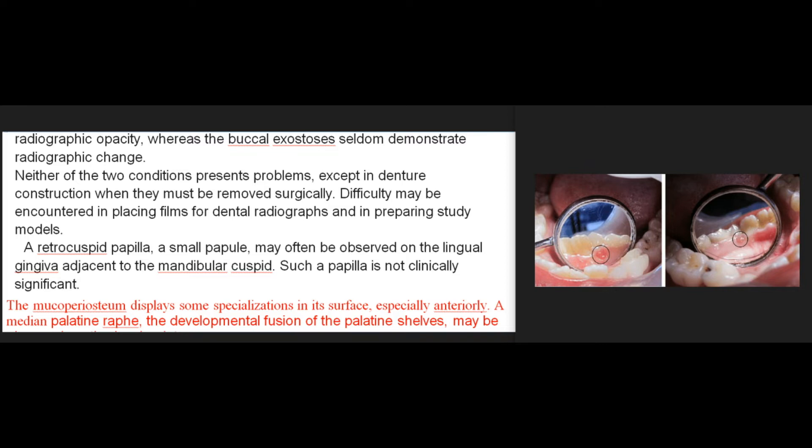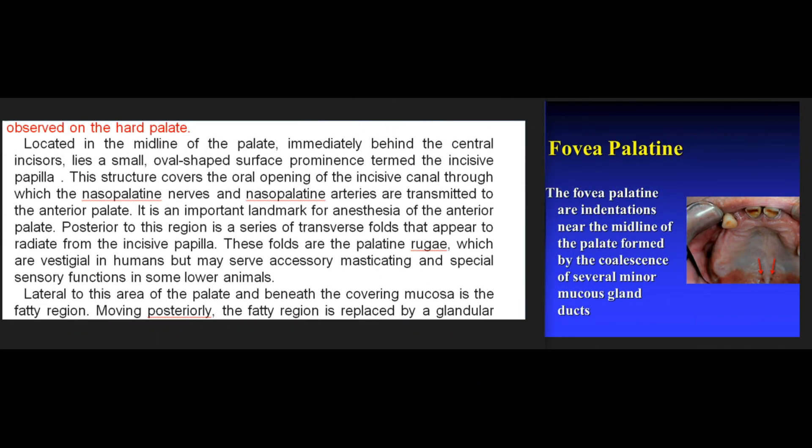A retrocuspid papilla, a small papule, may often be observed on the lingual gingiva adjacent to the mandibular cuspid; such a papilla is not clinically significant. The mucoperiosteum displays some specializations in its surface especially anteriorly: a median palatine raphe, the developmental fusion of the palatine shelves, may be observed on the hard palate. Located in the midline of the palate immediately behind the central incisors lies a small oval-shaped surface prominence termed the incisive papilla, which covers the oral opening of the incisive canal through which the nasopalatine nerves and arteries are transmitted to the anterior palate.